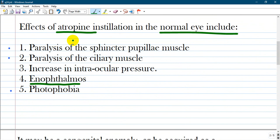So effects of atropine instillation into normal eye include... Pay attention in this question that condition is normal eye. And you see the following answers pointed are correct.